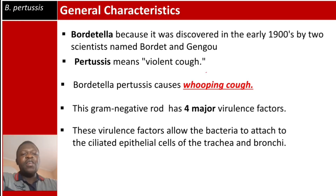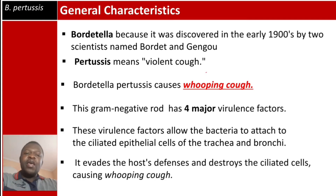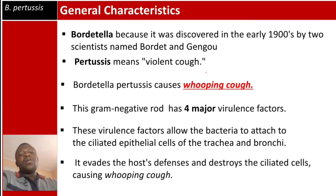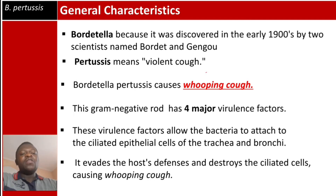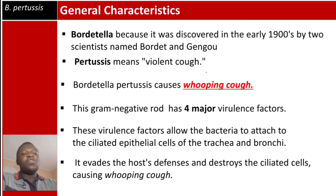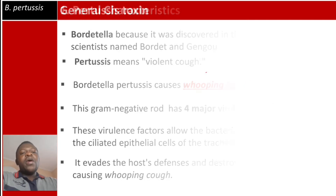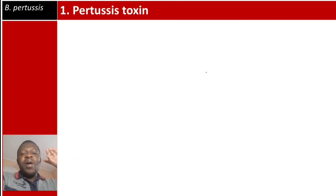This gram-negative rod has four major virulence factors. These virulence factors allow the bacteria to attach to the ciliated epithelial cells of the trachea and bronchi, help the organism evade the host's defense system, and destroy the ciliated cells causing the characteristic cough.